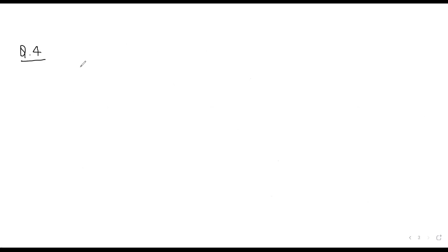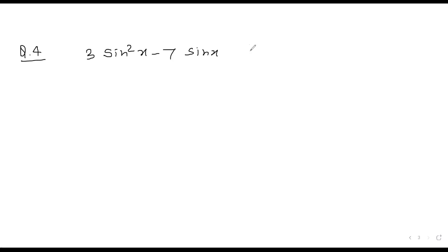Question number 4: find the number of solutions of 3sin²x − 7sin x + 2 = 0 in [0, 5π].